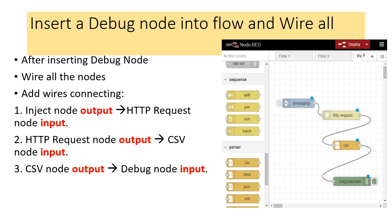Now we need to insert a debug node. After inserting the debug node, we need to wire all the nodes together. The output of the inject node is connected to the input of the HTTP request node. The output of the HTTP request node is connected to the CSV node input, and the CSV node output is connected to the debug node input.